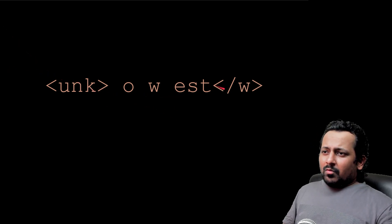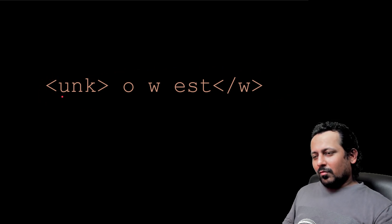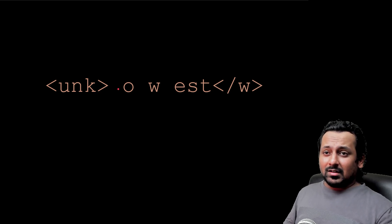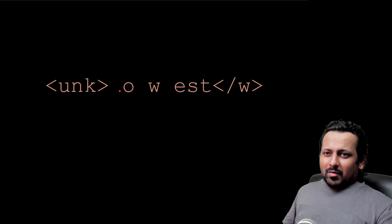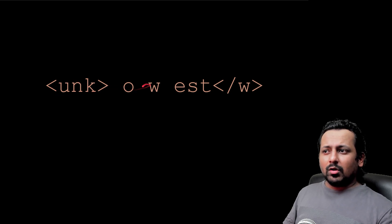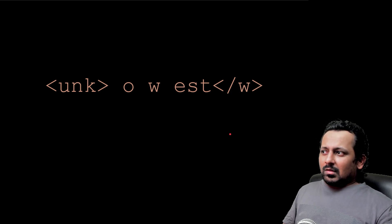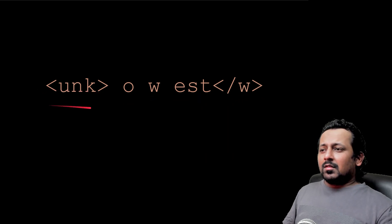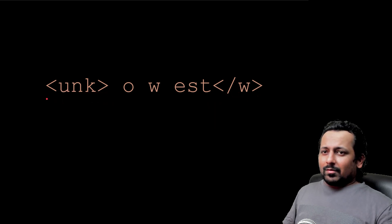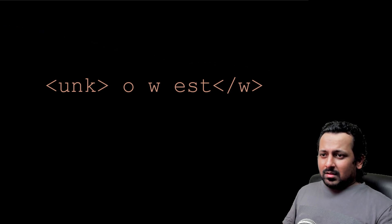One more thing: what we just saw is character-level byte-pair encoding — don't get confused by the word 'bytes' in the name. This character-level approach has a problem: it won't perform very well for languages like Chinese or Japanese, so in those cases we modify the algorithm a little bit.